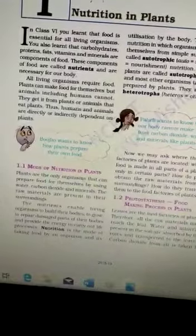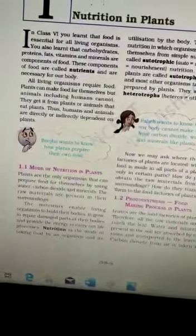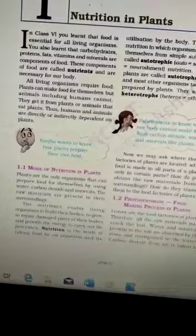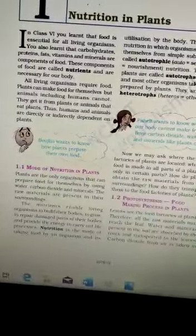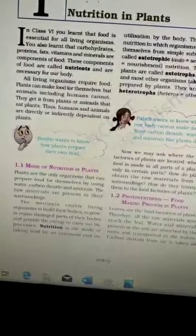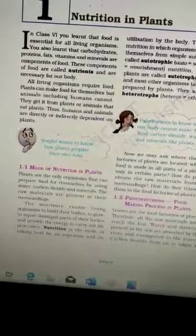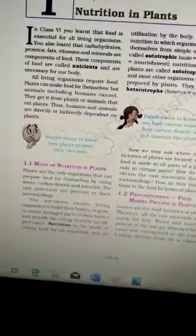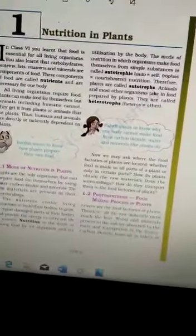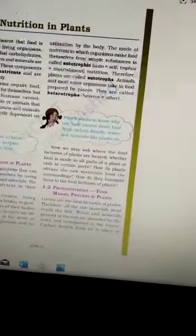Plants are the only organisms that can prepare food for themselves by using water, carbon dioxide, and minerals. The raw materials are present in their surroundings. The main mode of nutrition in plants is autotrophic mode.